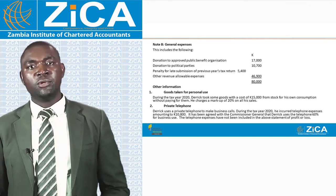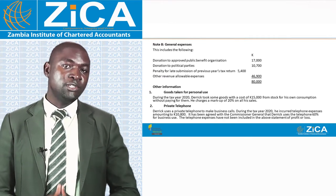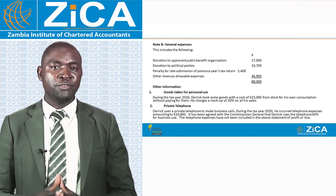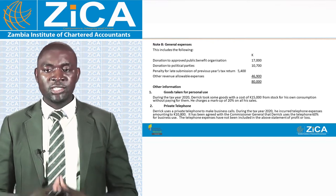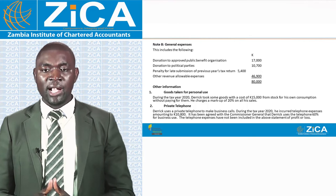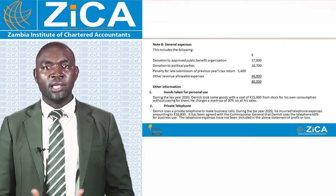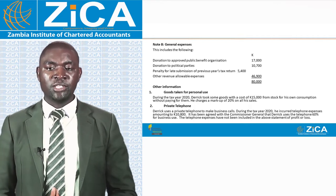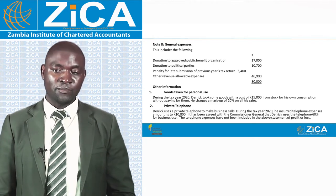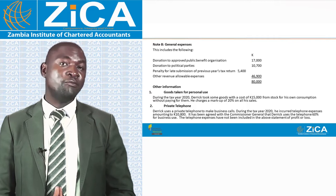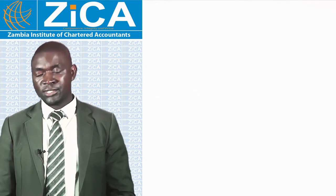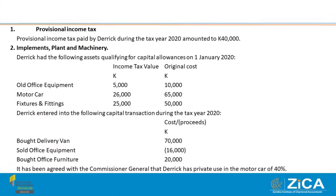Other information: goods taken for personal use — during tax year 2020 Derek took goods costing 15,000 kwacha from stock for his own consumption without paying; he charges a markup of 20% on all sales. Private telephone — Derek uses a private telephone for business calls; during tax year 2020 he incurred telephone expenses of 10,800 kwacha; it has been agreed with the Commissioner General that 60% is for business use; these telephone expenses have not been included in the statement of profit or loss. Provisional income tax paid by Derek during tax year 2020 amounted to 40,000 kwacha.